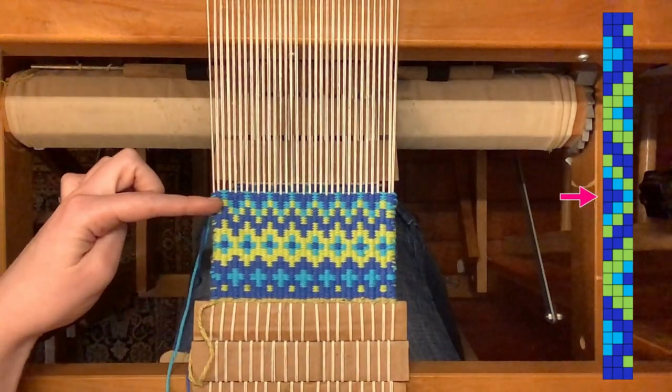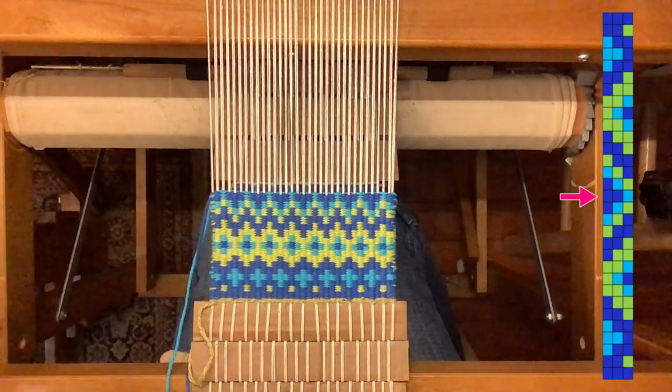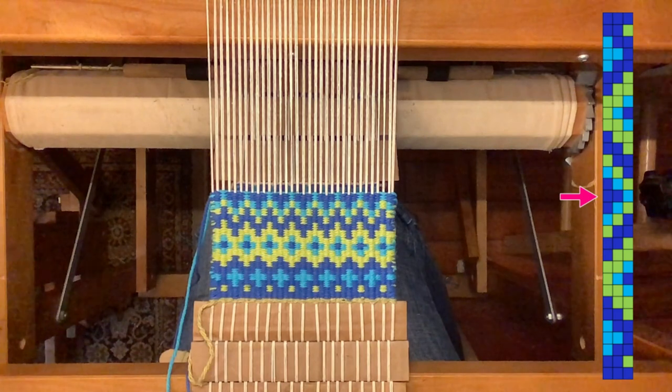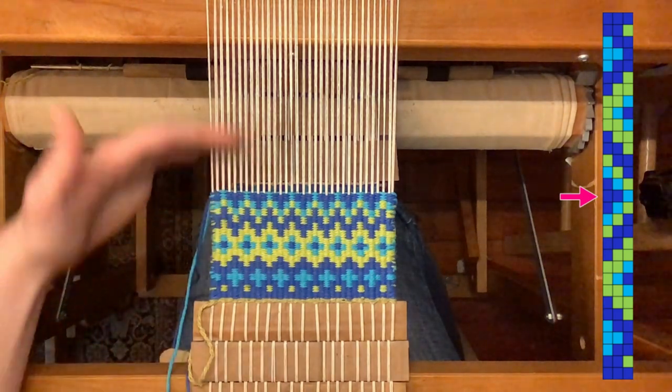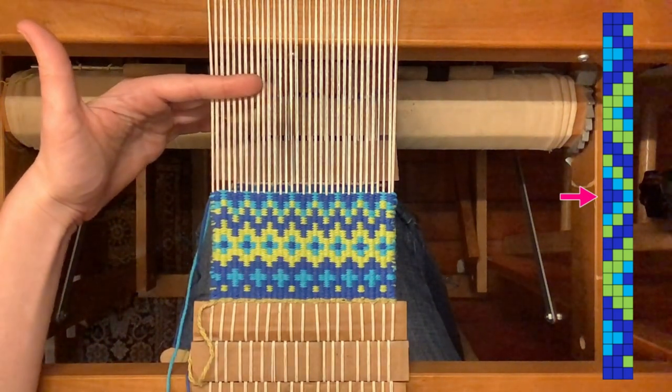Okay, at this point I am exactly halfway through the mug rug. This would be a great time to check, measure it, and make sure it's just over 2.5 inches to get you the length that you want when you flip the pattern around.